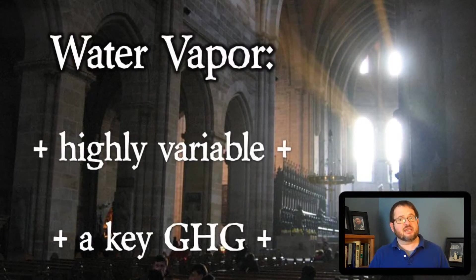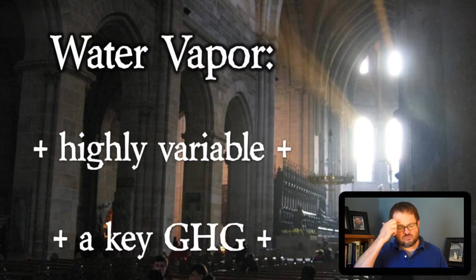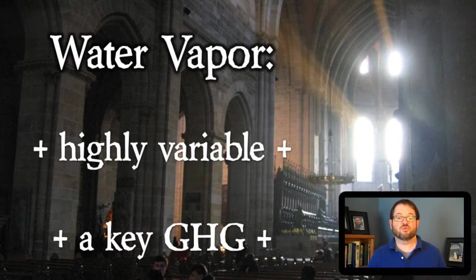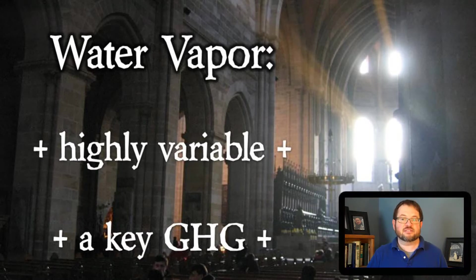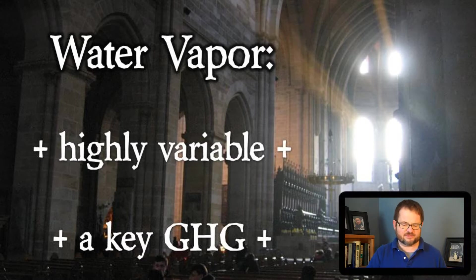The next most abundant gas in the Earth's atmosphere is water vapor. Water vapor is highly variable from one location to another, from one time to another, and from one height to another. But it is, in fact, a key greenhouse gas in the Earth's atmosphere — we'll use the abbreviation GHG for greenhouse gas.